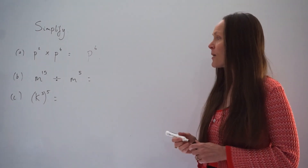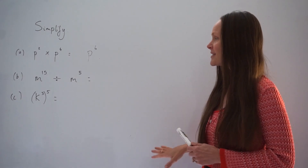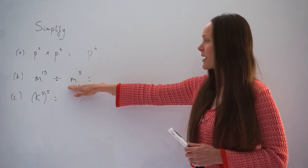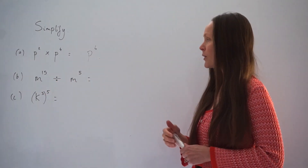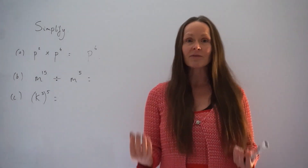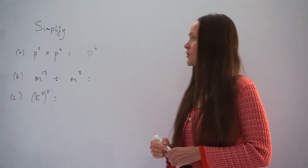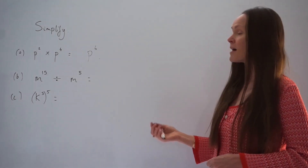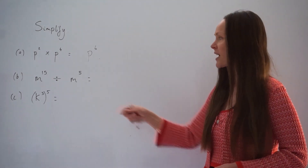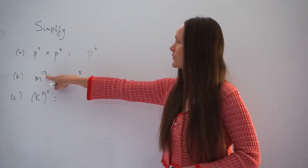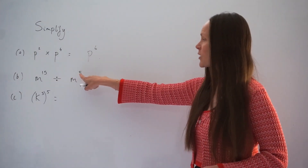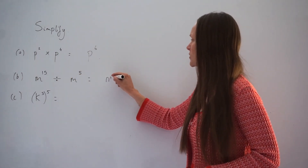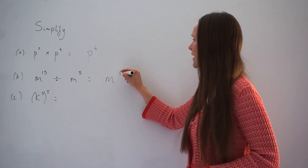In part B it says n to the power of 15 divided by n to the power of 5. This time we're dividing, so the rules of indices state that we must subtract their powers. So 15 take away 5 is 10, so the answer is m to the power of 10.